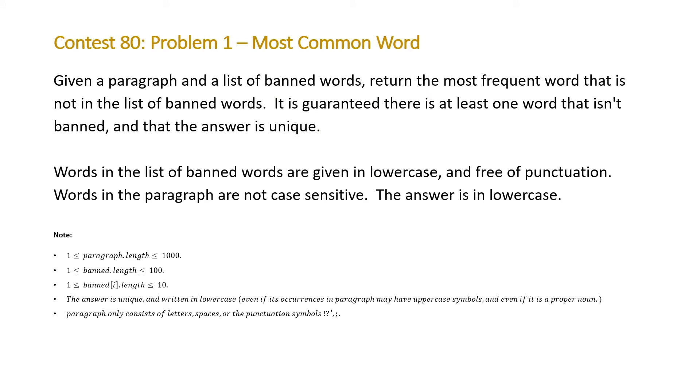The question states, Given a paragraph and a list of banned words, return the most frequent word that is not in the list of banned words. It is guaranteed that there is at least one word that isn't banned and that the answer is unique. Words in the list of banned words are given in lowercase and free of punctuation. Words in the paragraph are not case sensitive. The answer is in lowercase. And note that the length of our paragraph is going to be less than a thousand. The length of our banned words is going to be less than a hundred. The length of each of our banned words is going to be less than ten. And the paragraph when it comes to punctuation is going to consist of exclamation, question, apostrophe, comma, semicolon, and period. So, let's take a look at an example.